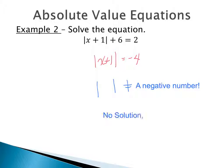There is no solution, so we would say no solution or the empty set. Not much work to do as long as you can identify that moving the 6 over gives negative 4. Whenever the absolute value equals a negative number, there is no solution. If you did walk through this by hand and made two equations, when you went back to check, those two solutions would not work in the original equation. Always go back and verify that neither solution works, which is why you'd have no solution.